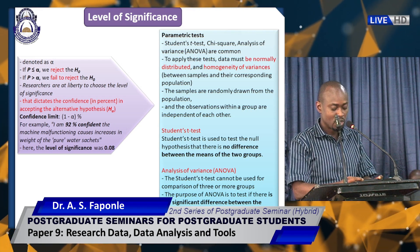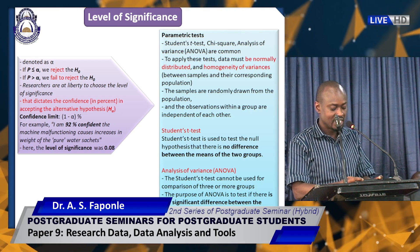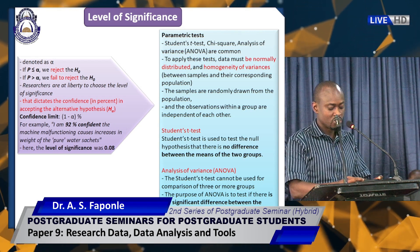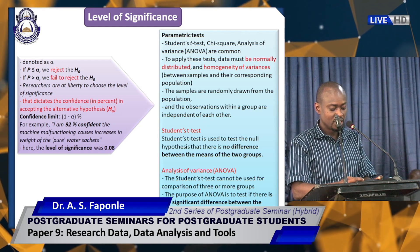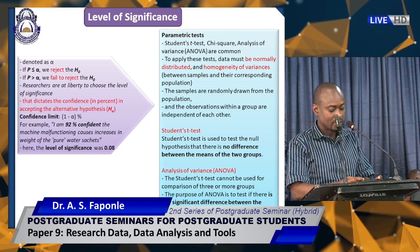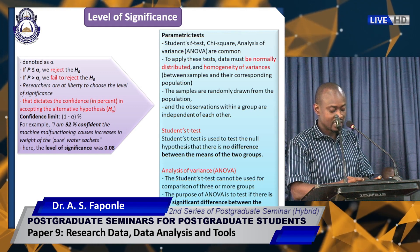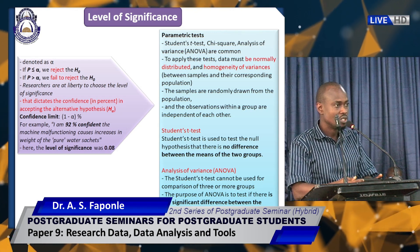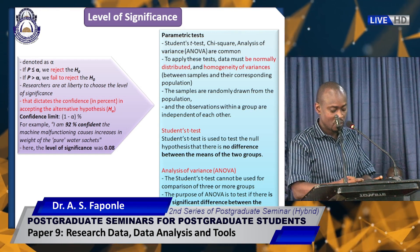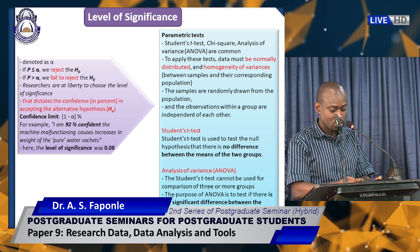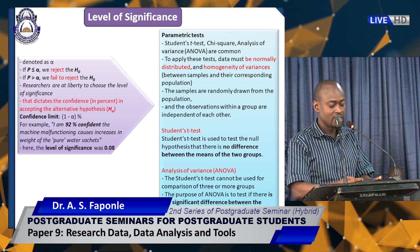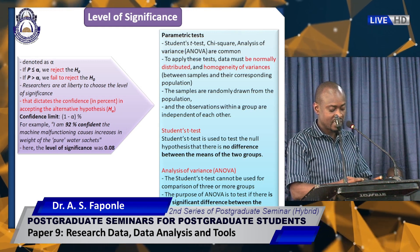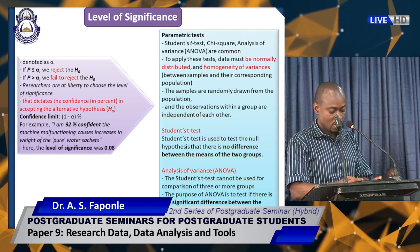To apply these parametric tests, data must be normally distributed with homogeneity of variances between samples and their corresponding population. The samples must be randomly drawn from the population and observations within a group must be independent of each other. The student t-test is used to test the null hypothesis that there is no difference between the means of two groups. For ANOVA — analysis of variance — the student t-test cannot be used for comparison of three or more groups, so we use ANOVA. The purpose of ANOVA is to test if there is any significant difference between the means of two or more groups.